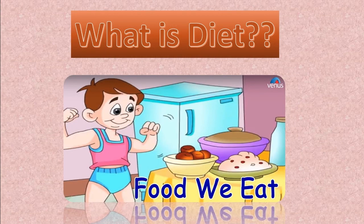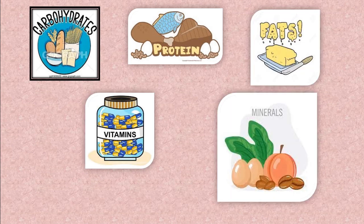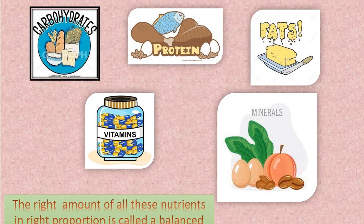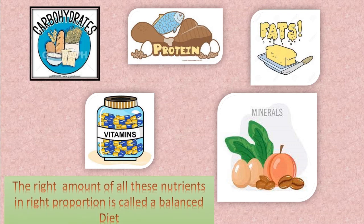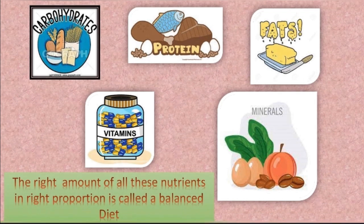Next is balanced diet. The food we eat is called a diet, and our food contains nutrients like carbohydrates, proteins, fats, vitamins and minerals. The right amount of all these nutrients in the right proportion is called a balanced diet. Here is a picture showing some food items that make a balanced diet, and in order to stay healthy we should eat food items from each food group daily.